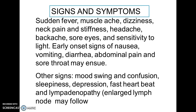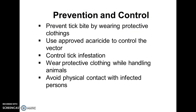Your heartbeat may also become faster than normal, and you may experience lymphadenopathy — enlarged lymph nodes. For example, lymph nodes under your armpit, below your ears, or in the groin area may become swollen, slightly painful, or warm. These are signs that may suggest a viral infection such as Crimean Congo Hemorrhagic Fever.